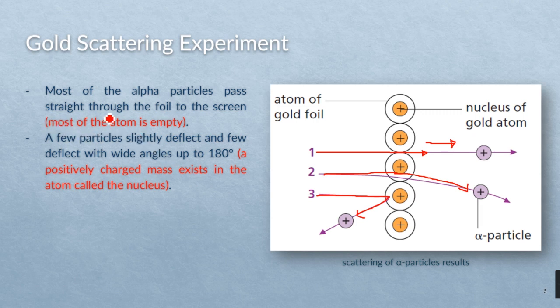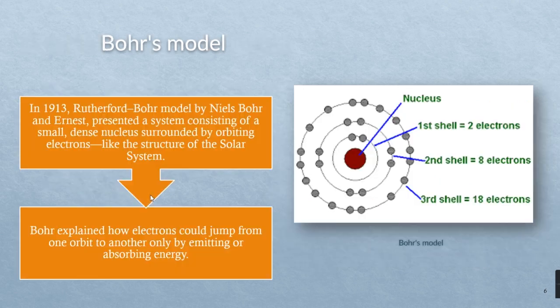So that described that the atom structure was mostly empty and that the positively charged mass in the center exists, which was the reason for deflecting the positive alpha particles.